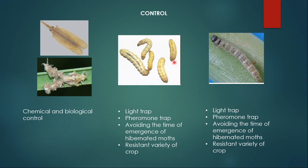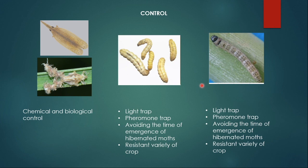However, for Scirpophaga nivella and Chilo infuscatellus, the larvae hibernate in winter, pupate at the end of winter, and come out in March. So we need to avoid that window when the insects emerge from their pupae. If our plants are mature enough before these adults are ready to lay eggs, then most of our crop will be safe from these attacks. We can also use resistant varieties of crop — biotechnologically, many sugarcanes have been produced which are resistant to Scirpophaga and Chilo attack, and we can use those varieties in our fields.